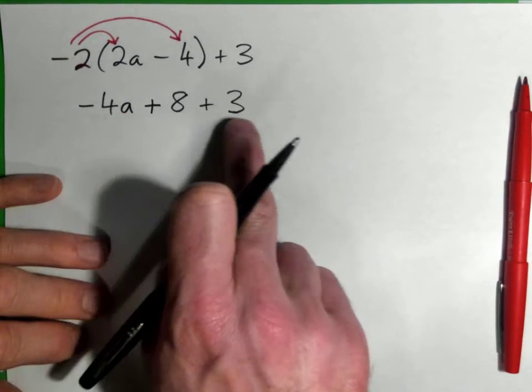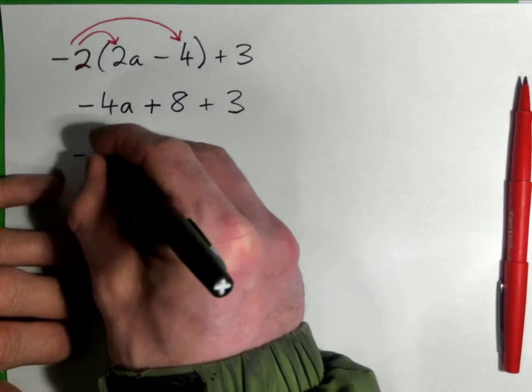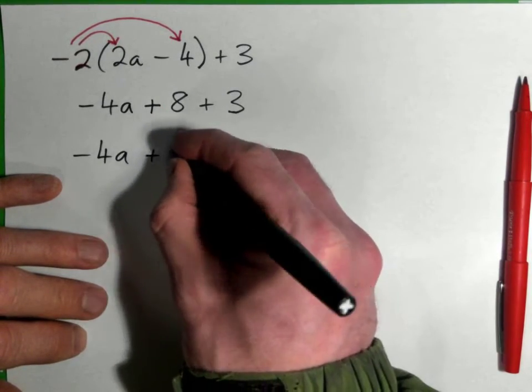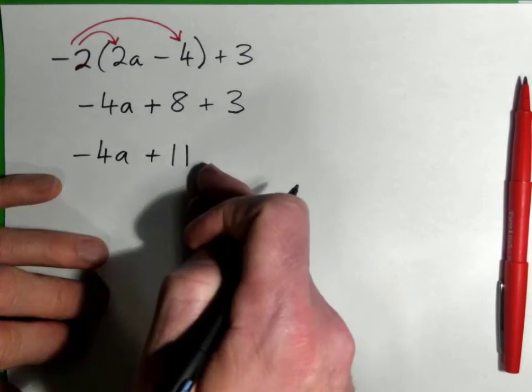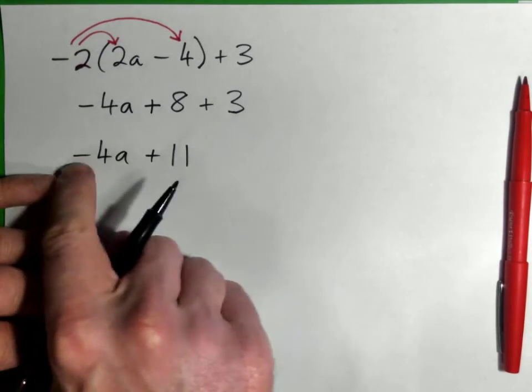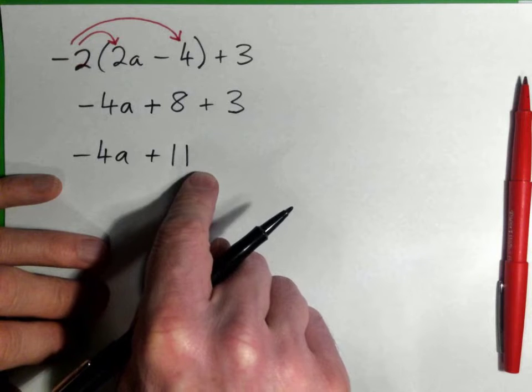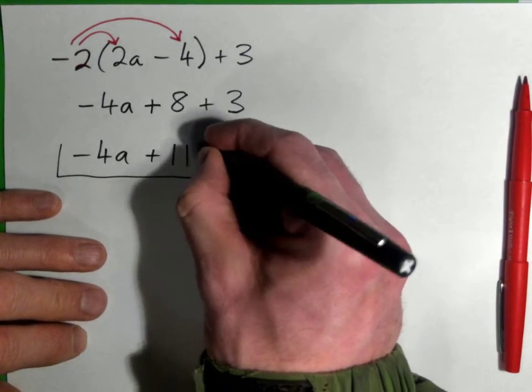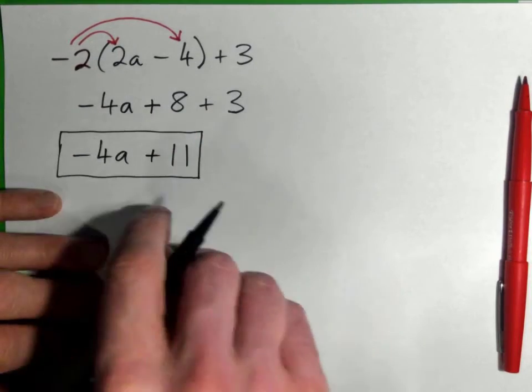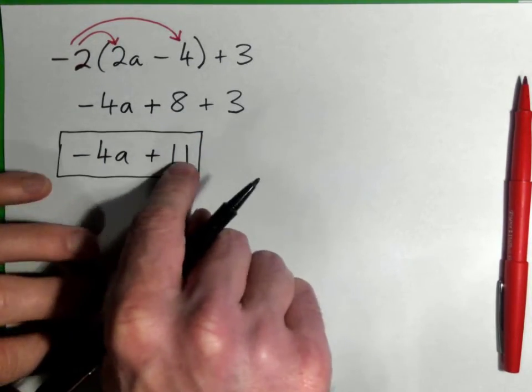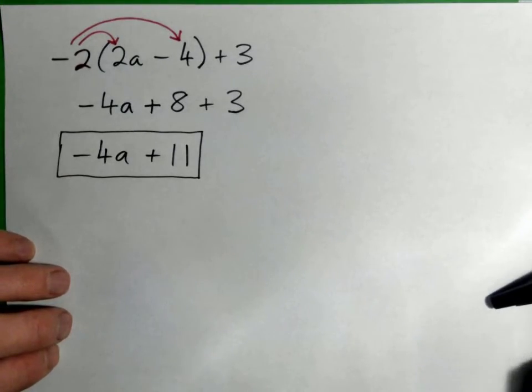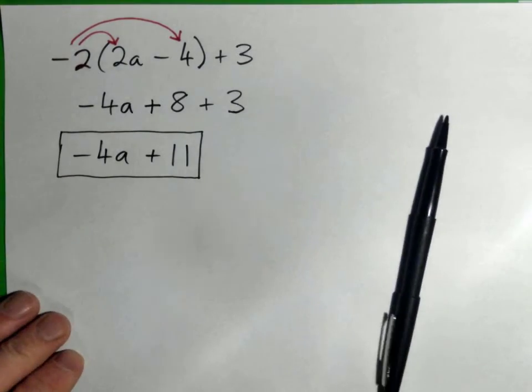So negative 4 apples plus 11 dollars - different terms, not like terms. Can we add these together? No, we cannot add these unlike terms together, so the complete answer is negative 4a plus 11. We're done.